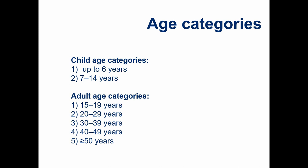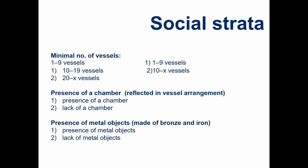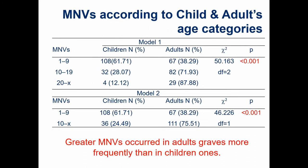The age categories include children and adults, where adulthood started at age 15. For social strata, we assume these variables were a proxy for social stratification: minimal numbers of vessels — in two models: three categories (1–9, 10–19, and 20 or more vessels) and two categories (1–9 and 10 or more vessels) — presence or lack of a chamber, and presence or lack of metal objects. This is our proposal of these variables as a proxy for social stratification of the population under study.